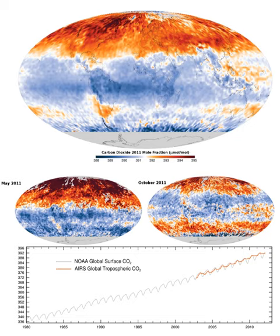Carbon dioxide is converted into sugars in a process called carbon fixation. Carbon fixation is an endothermic redox reaction, so photosynthesis needs to supply both the source of energy to drive this process and the electrons needed to convert CO2 into a carbohydrate. This addition of electrons is a reduction reaction. In general outline, photosynthesis is the opposite of cellular respiration, in which glucose and other compounds are oxidized to produce CO2 and water, and to release exothermic chemical energy to drive the organism's metabolism.